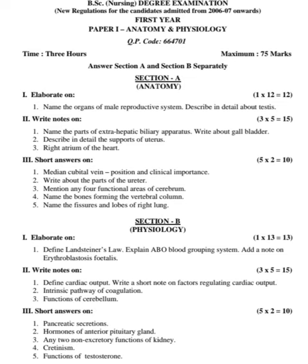Short answers on 2 marks questions. First: pancreatic secretion. Second: hormones of the anterior pituitary gland. Third: any two non-excretory functions of the kidney. Fourth: cretinism. Fifth: functions of testosterone.